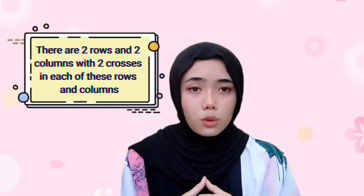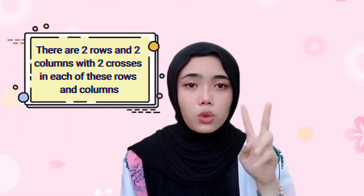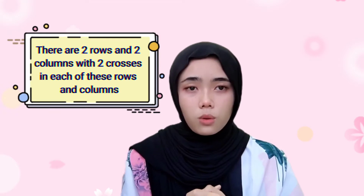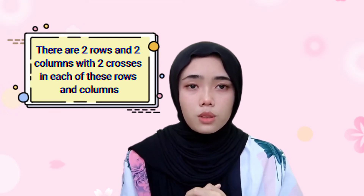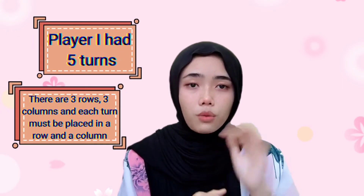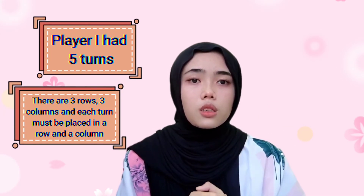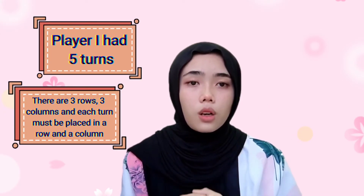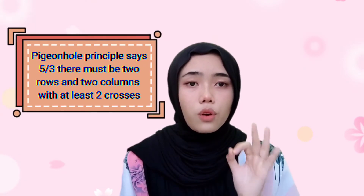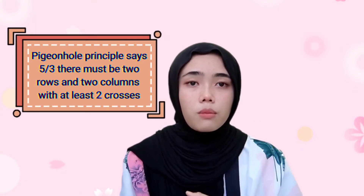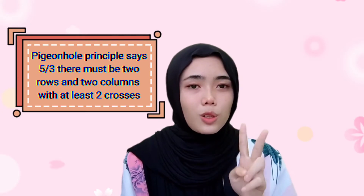The last question is: there are 2 rows and 2 columns with 2 crosses in each of these rows and columns. The statement is true because player 1 had 5 turns. There are 3 rows and 3 columns, and each turn must be placed in a row and column. By the pigeonhole principle, 5 over 3 means there must be 2 rows and 2 columns with at least 2 crosses.